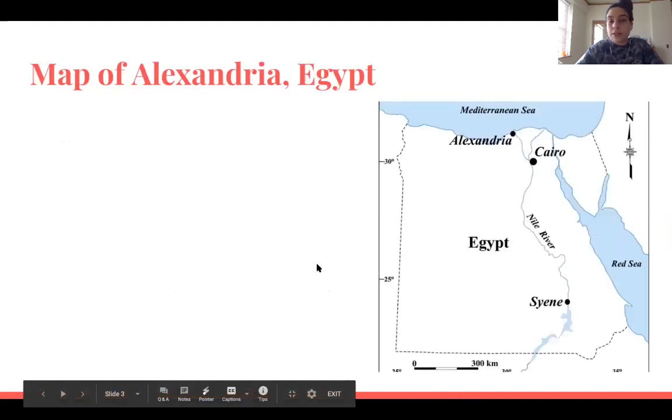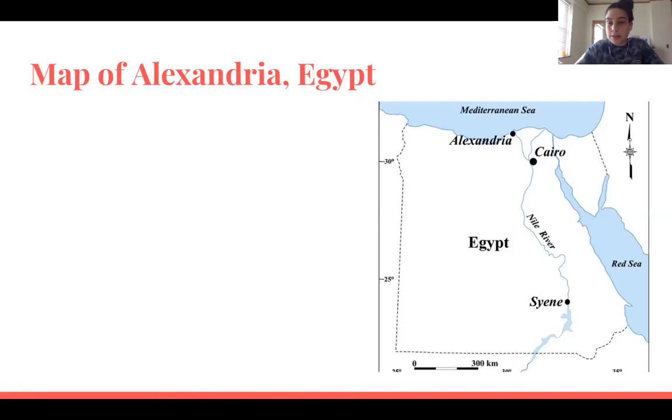And then I just wanted to include a quick map of Alexandria, Egypt, just to show you where it was. It's around here near the Mediterranean Sea, near the Nile River, and not far from Cairo.